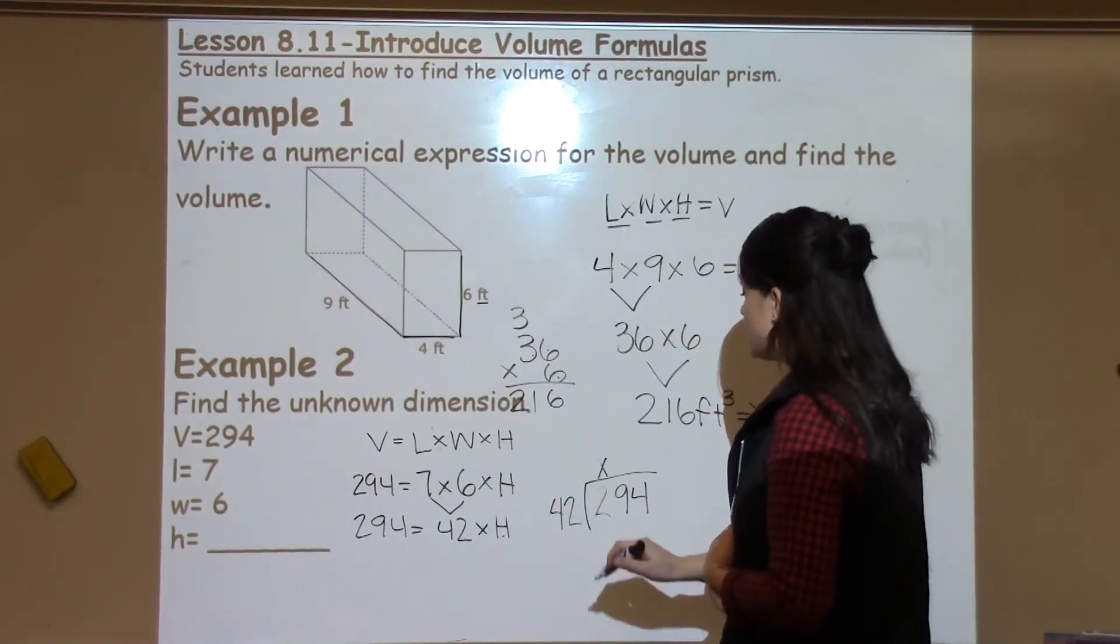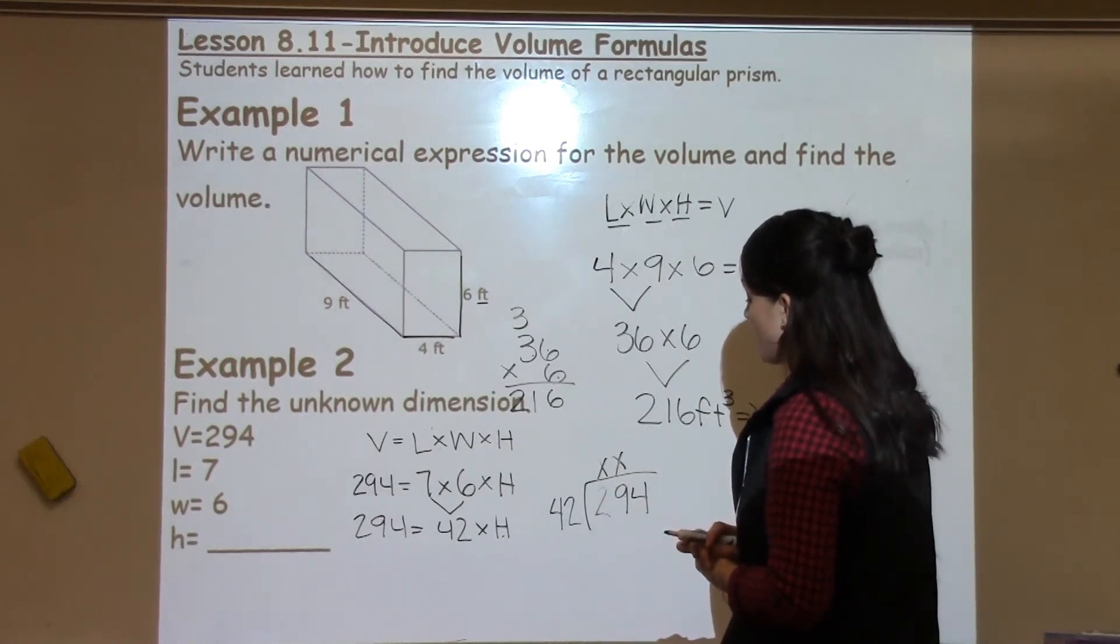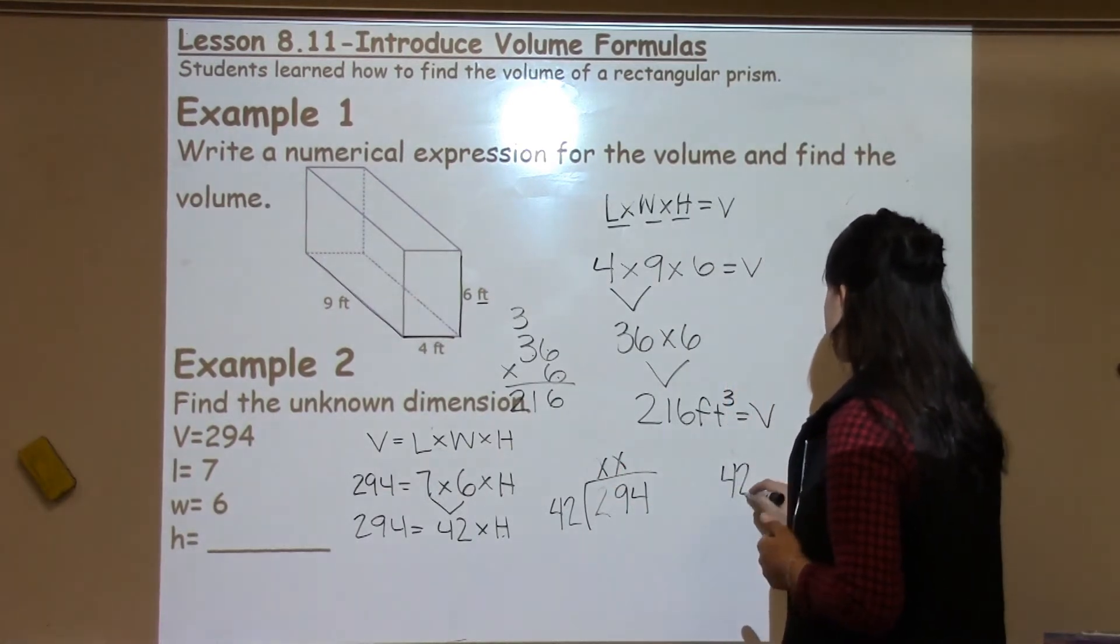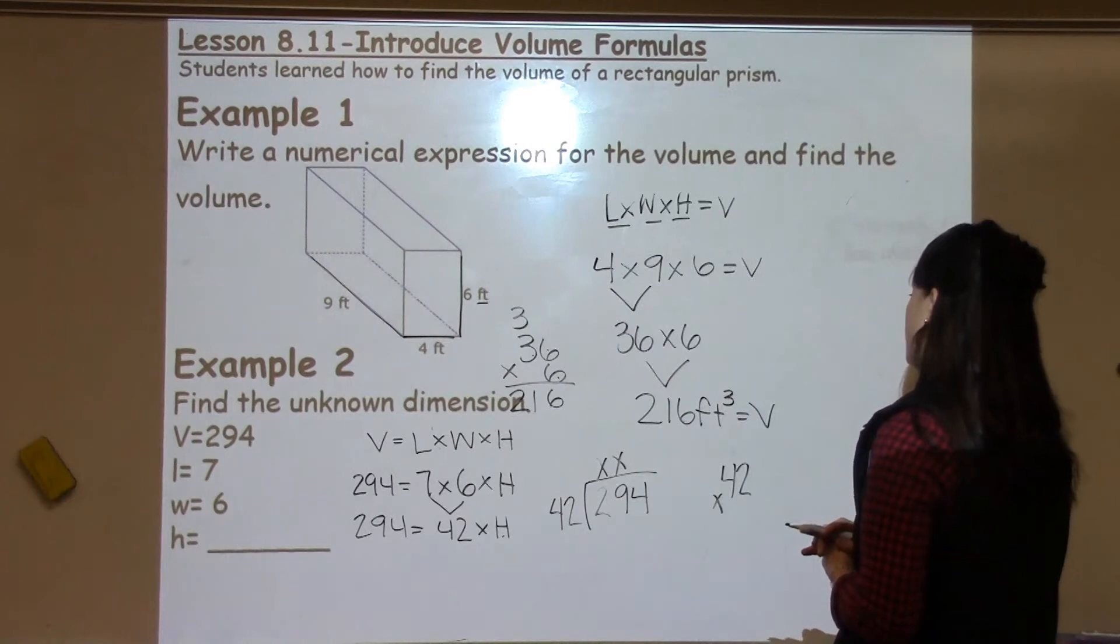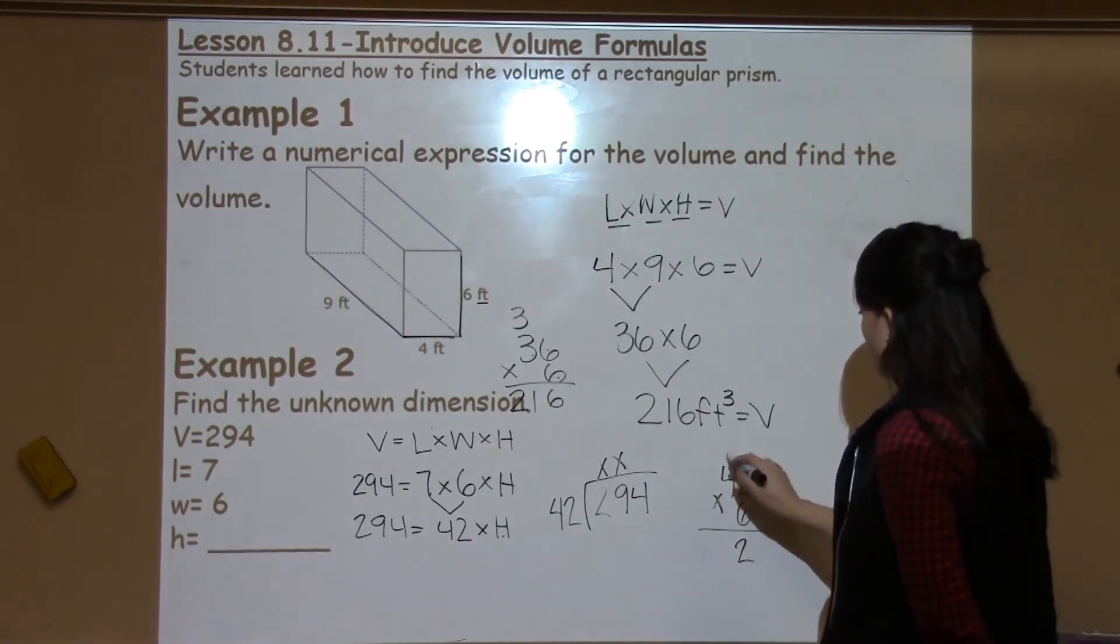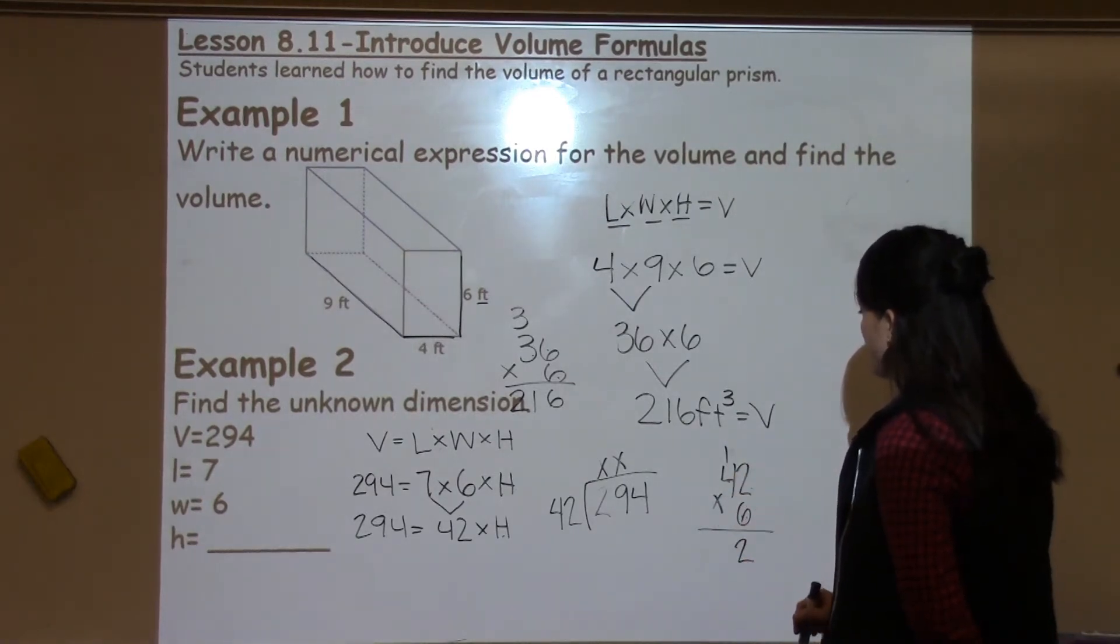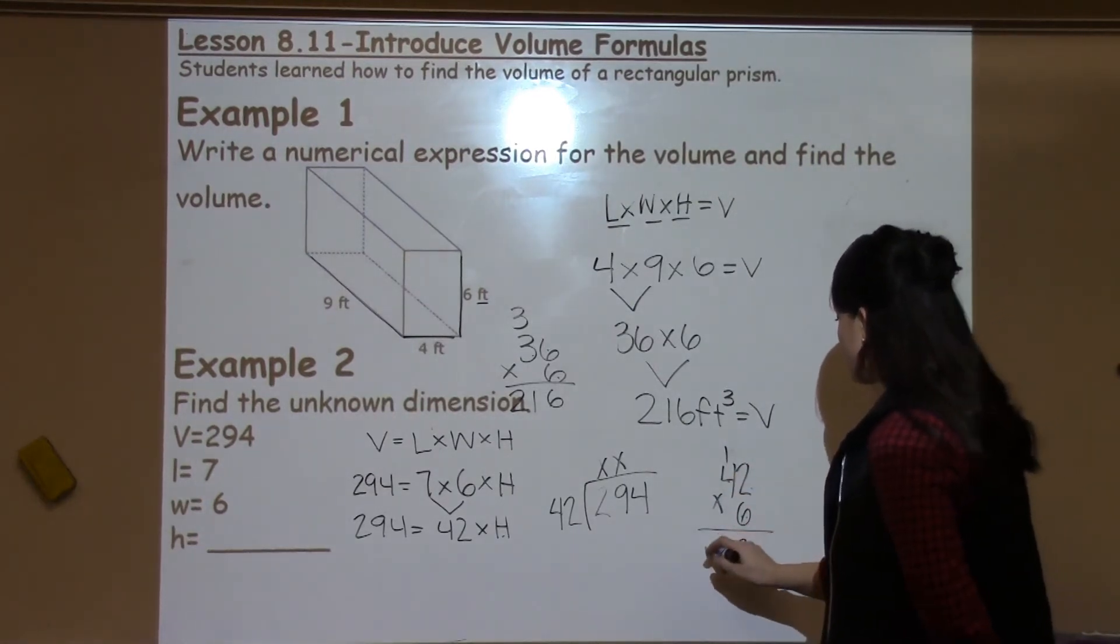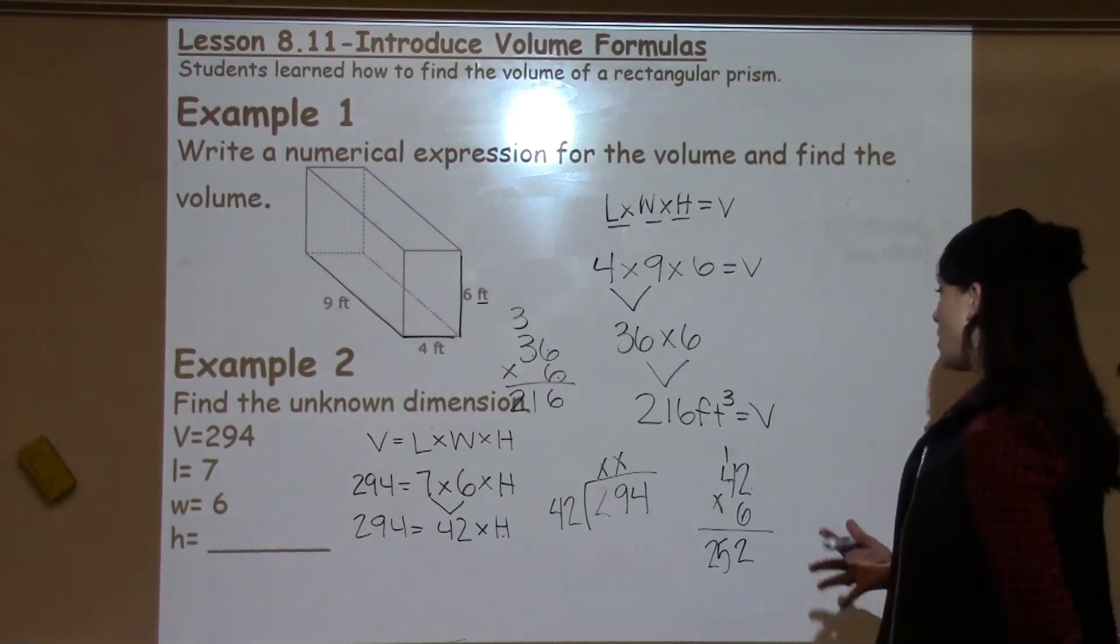So I know that 42 cannot go into 2 and it can't go into 29. So I need to find something that will get me pretty close to 294. So I'm going to go ahead and try 6. 2 times 6 is 12. Carry the 1. 6 times 4 is 24 plus 1 is 25. And I need to go a little bit higher.